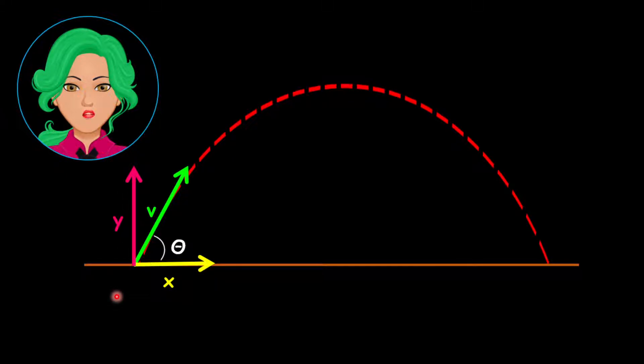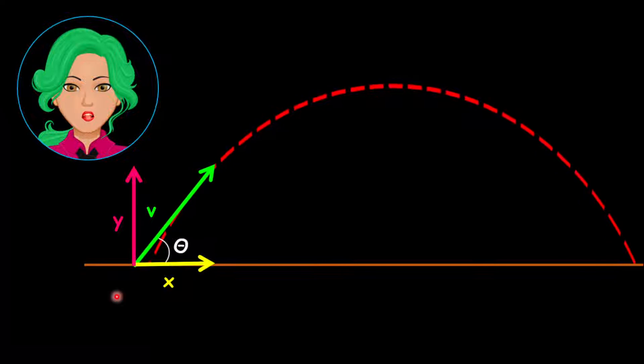Now, if we draw a line here, it is equal to the X component, or horizontal velocity. If we draw another line here, it is equal to the Y component, or vertical velocity.